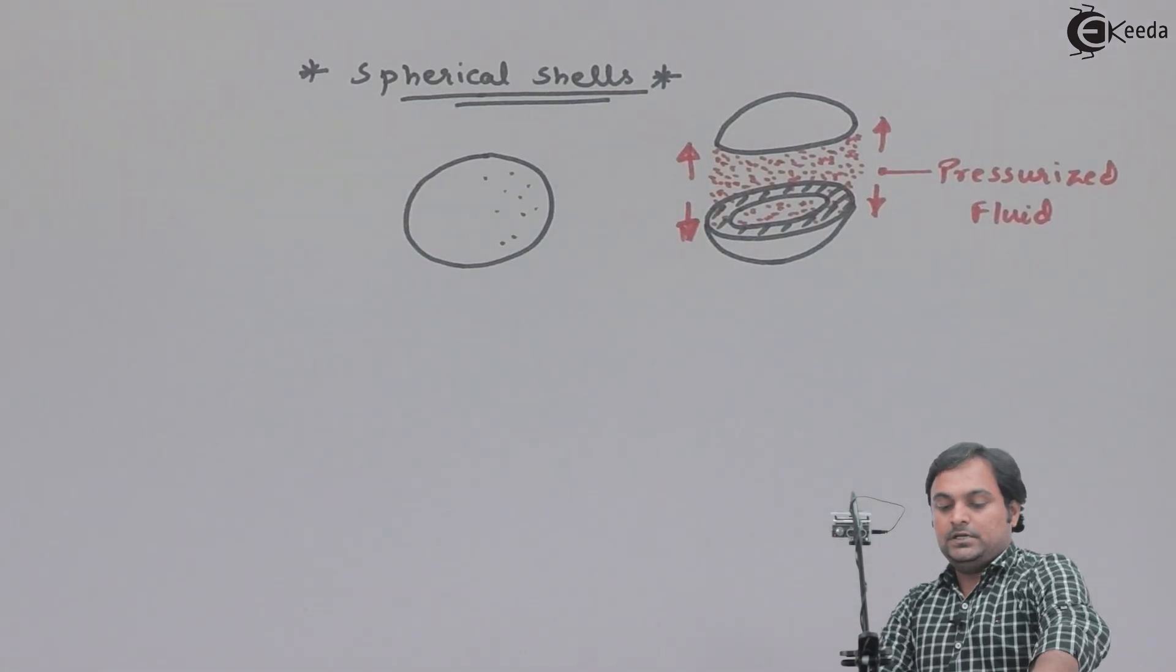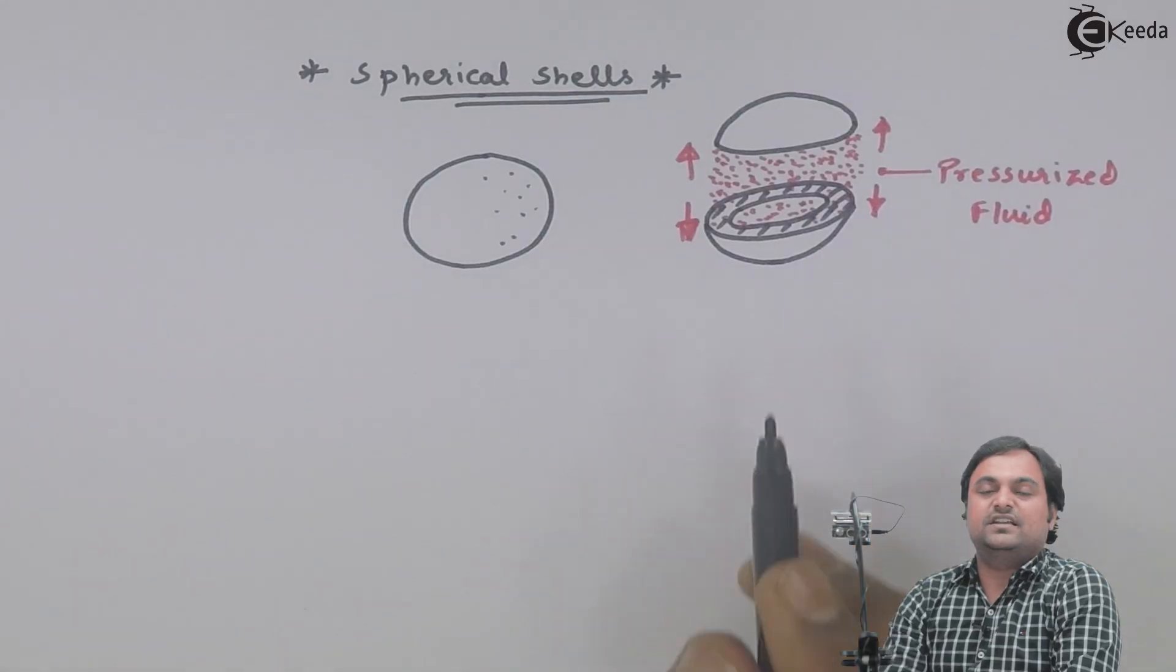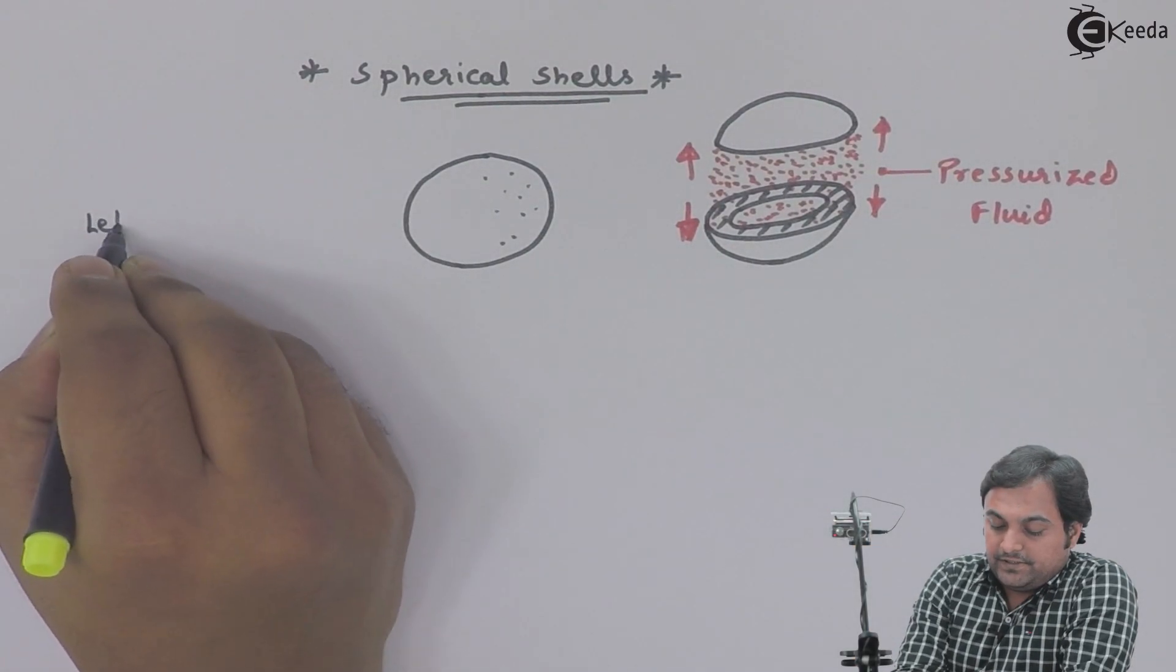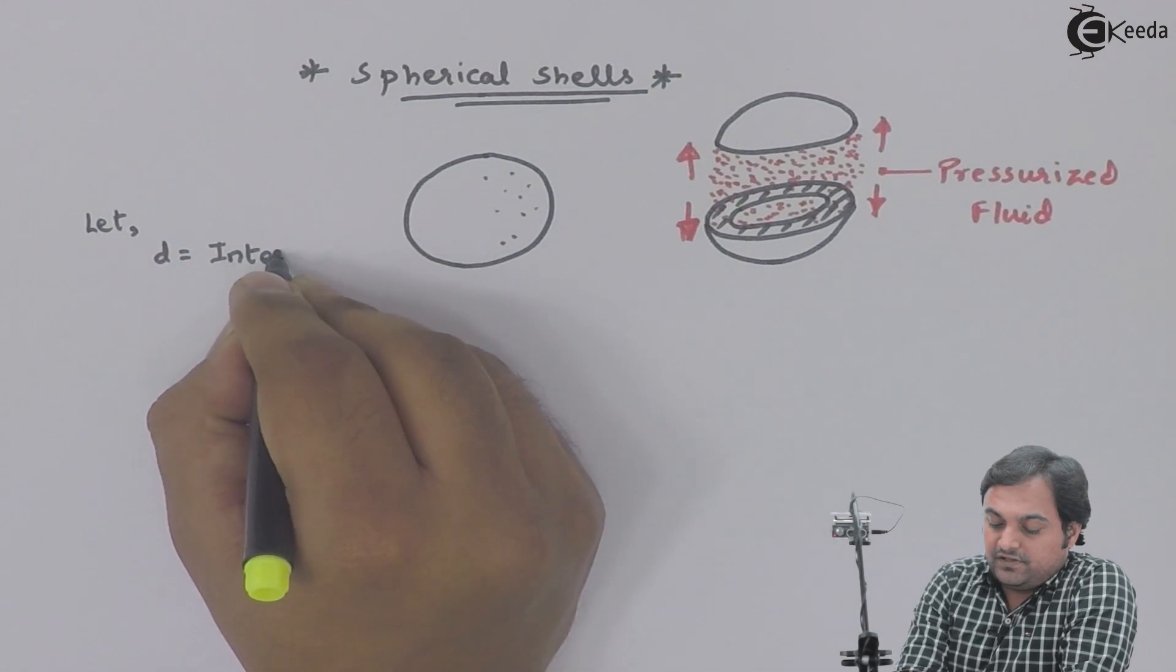The thickness of the vessel is less as compared to the diameter. So I will say that let small d be the internal diameter of the spherical vessel.